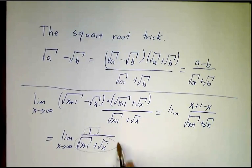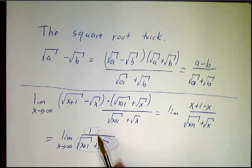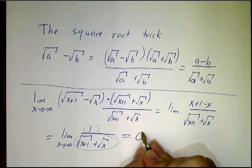This doesn't grow. This does. In the long run, you have 1 over a gigantic number, and that gives you 0.